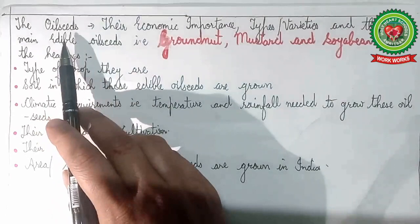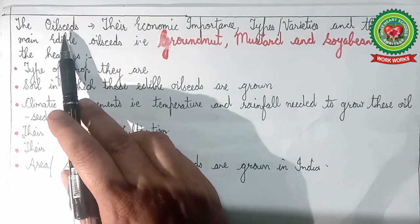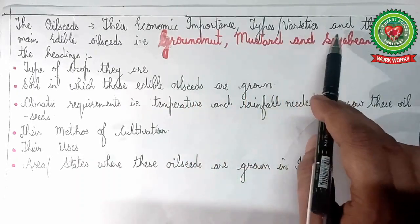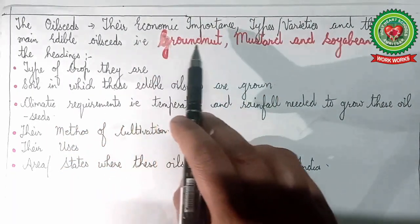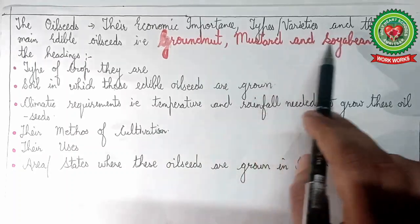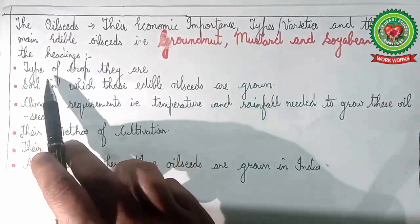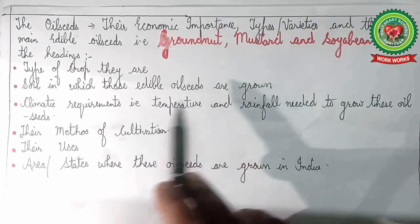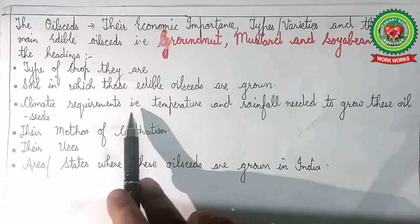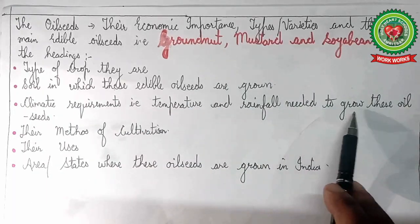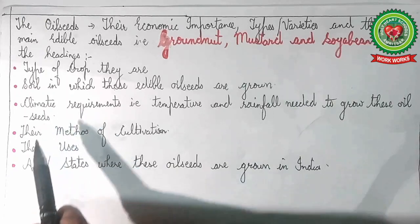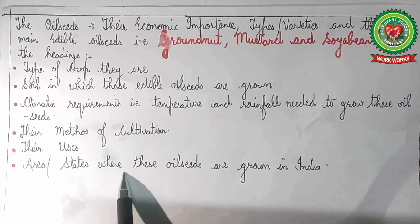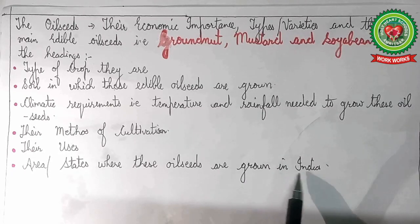So children, through this video you have learnt about the various oilseeds, their economic importance, types, varieties, and the three main edible oilseeds — groundnut, mustard, and soyabean — under the following headings: type of crop, soil in which these edible oilseeds are grown, climatic requirements including temperature and rainfall, their methods of cultivation, their uses, and area states where these oilseeds are grown in India. Thank you.